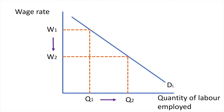Also consider what happens as firms expand output. They are adding additional units of labour to fixed amounts of capital and thus experience diminishing returns at some point. Therefore, they would not be willing to pay high wage rates to increasing units of labour.